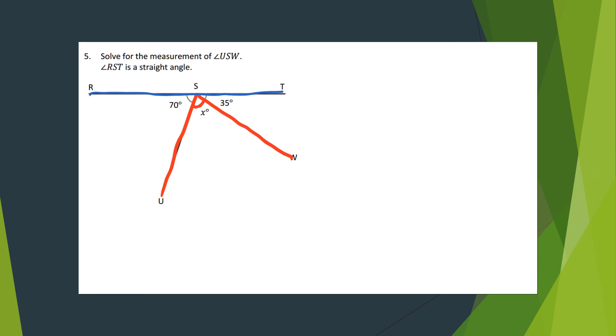If I look, here's USW, so I'm solving for this angle right there. They're telling me that RST is a straight angle, and like we discussed before, a straight angle is half a circle, so we know it's going to equal 180 degrees. I'm going to write that 180 just like I've done in all my examples so that I see it - if I write it and I see it, then I won't forget it.